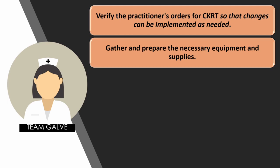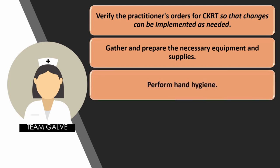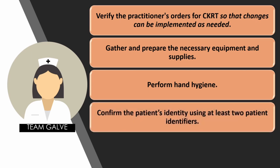After verifying the order, gather your articles as discussed in the equipment section. Perform hand hygiene — very important to prevent the spread of infection. Confirm the patient's identity using at least two patient identifiers. For ICU patients, it is important that there is an ID band, and you verify it with two nurses — verify the patient receiving CRRT against the ID band, checking the patient's name as it appears in the system, along with the medical record number (MRN) or patient ID number.